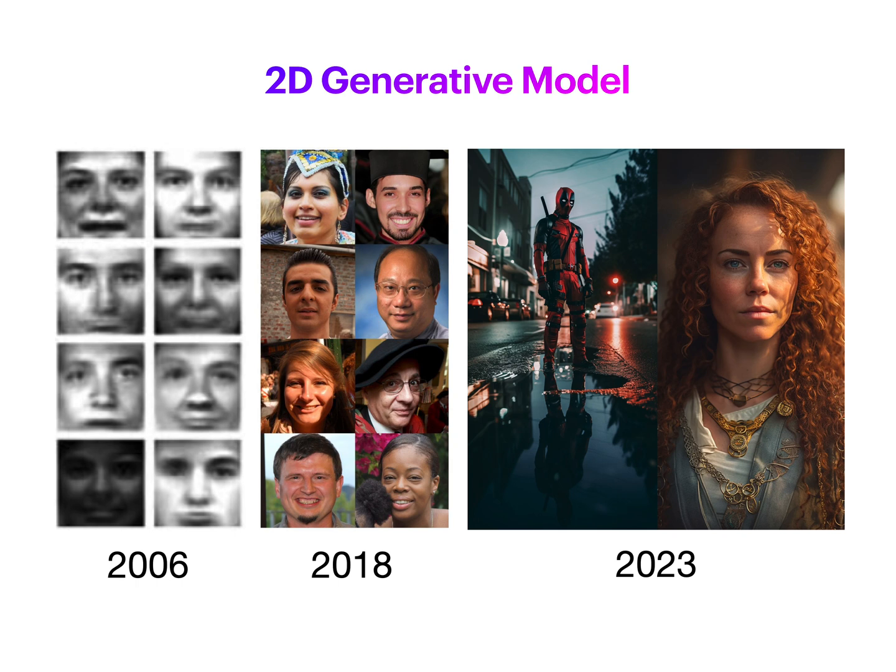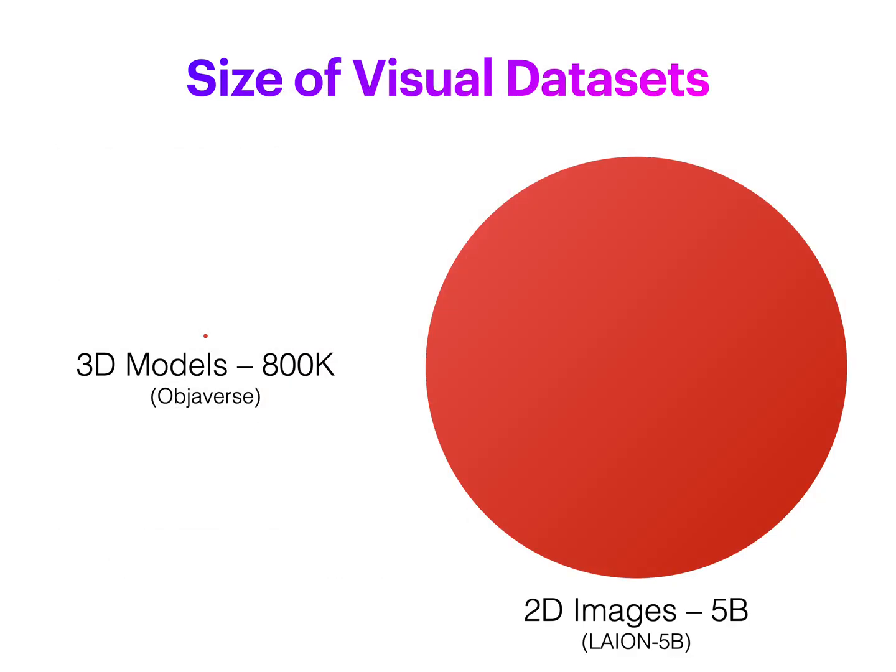Generative models have made tremendous progress in recent years due to the growth of computational power, size of open source datasets, and novel generative architectures. Cutting-edge methods like diffusion models trained on internet-scale vision language datasets achieve stunning results on 2D image generation. When it comes to 3D, data has been a long-standing bottleneck that prevents zero-shot methods from emerging.